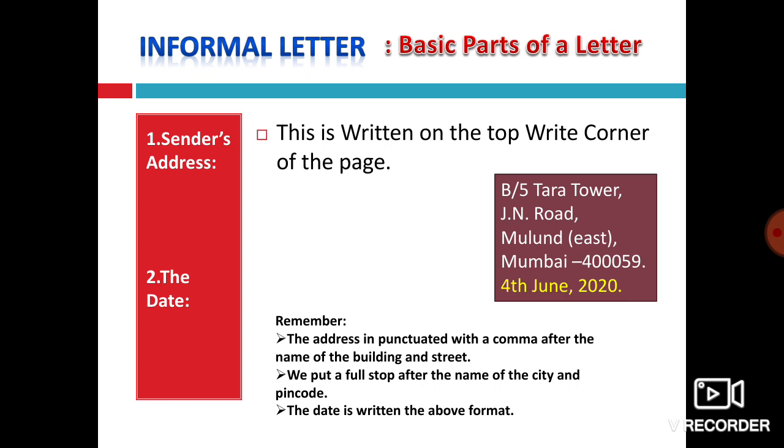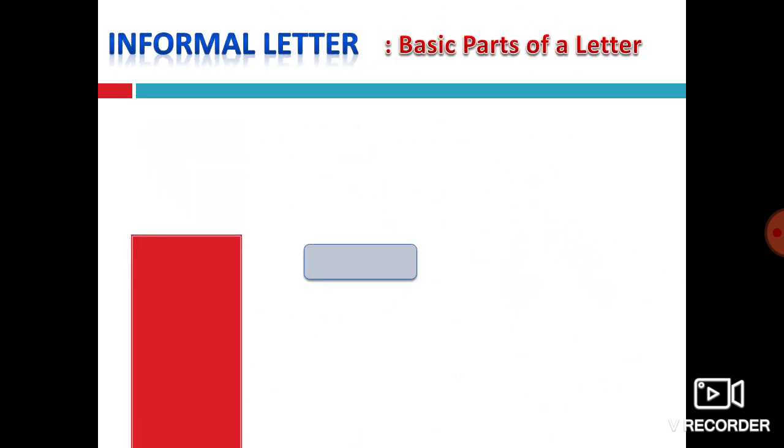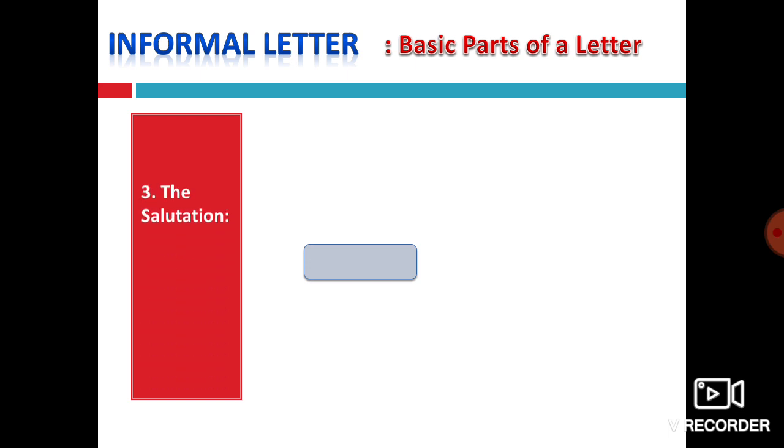Now in the yellow color you can see the date, 4th June 2020. How it is written? It is written first of all in the ordinal manner, 4th, then June, then comma, and then the year, and then the full stop. The same way you have to write the date.